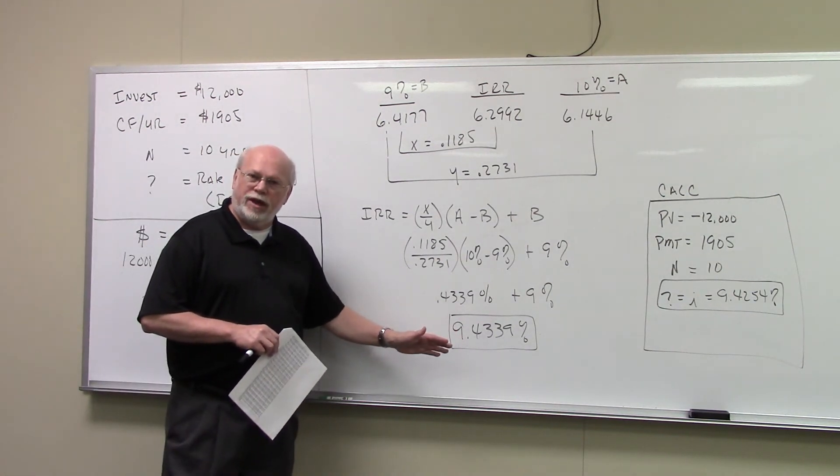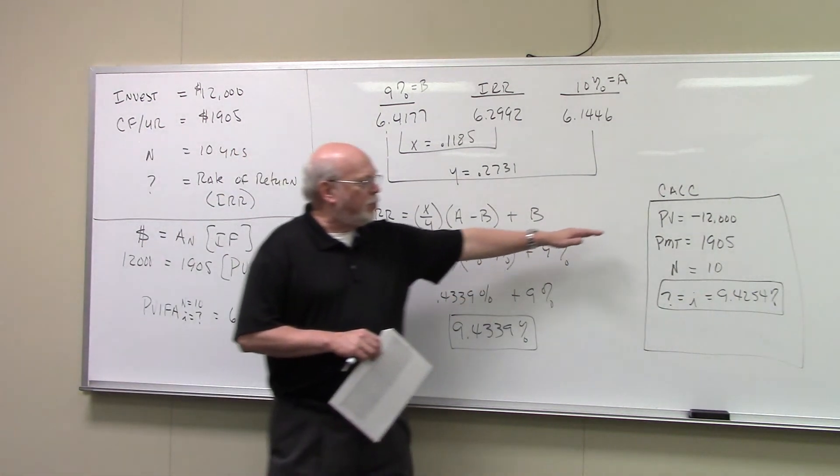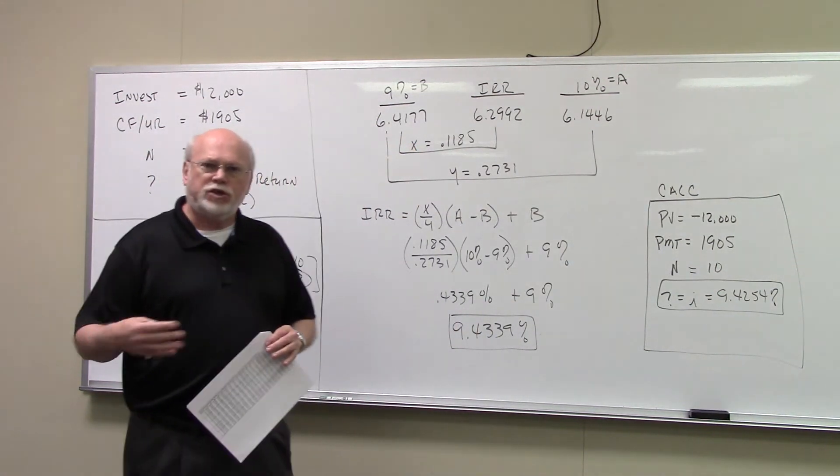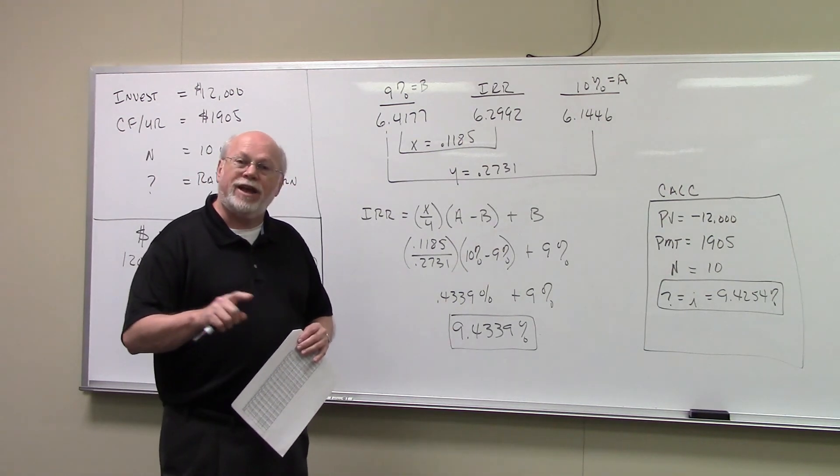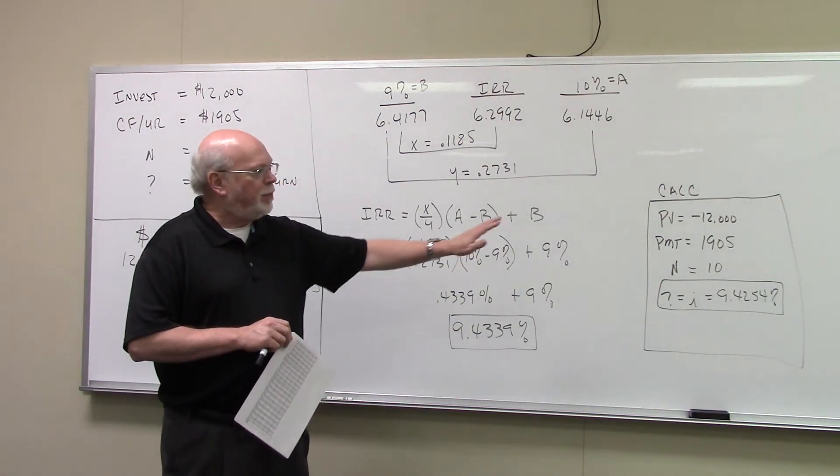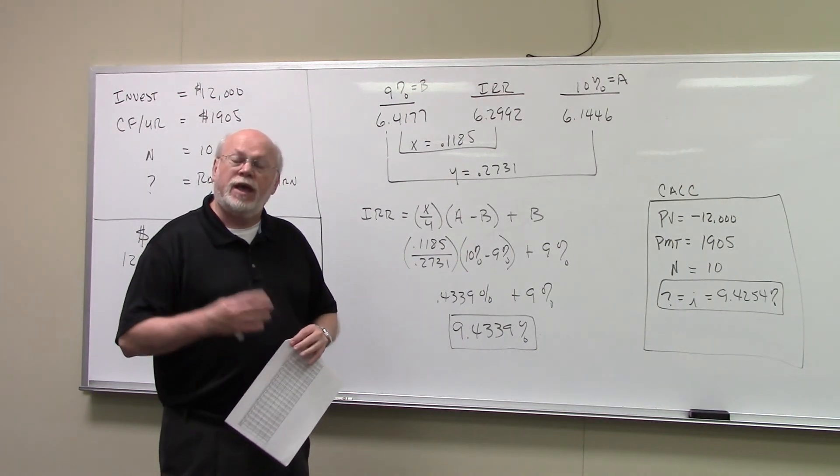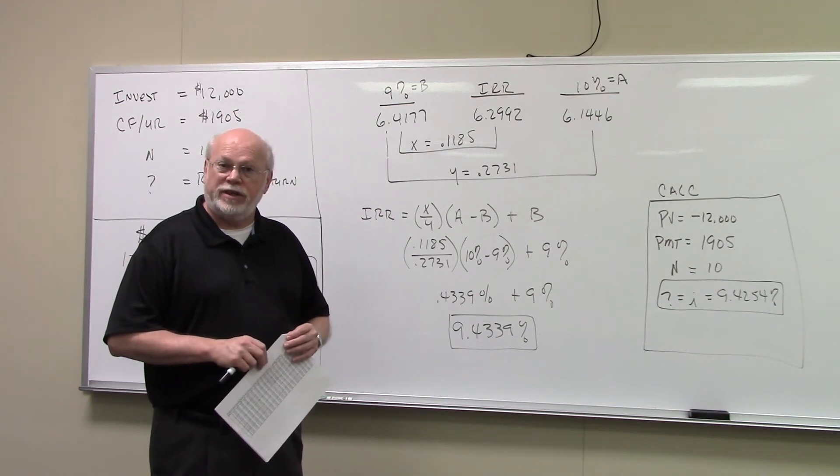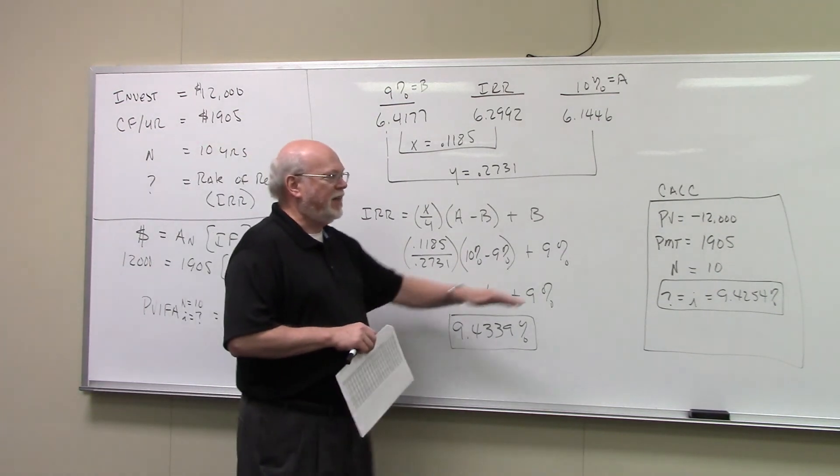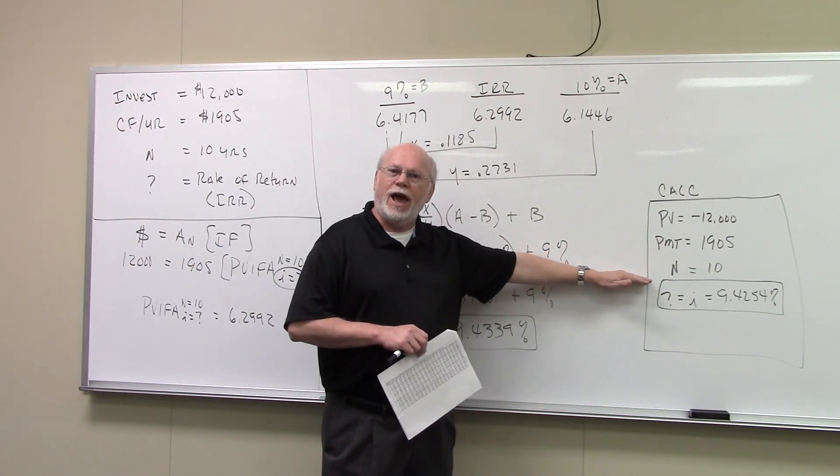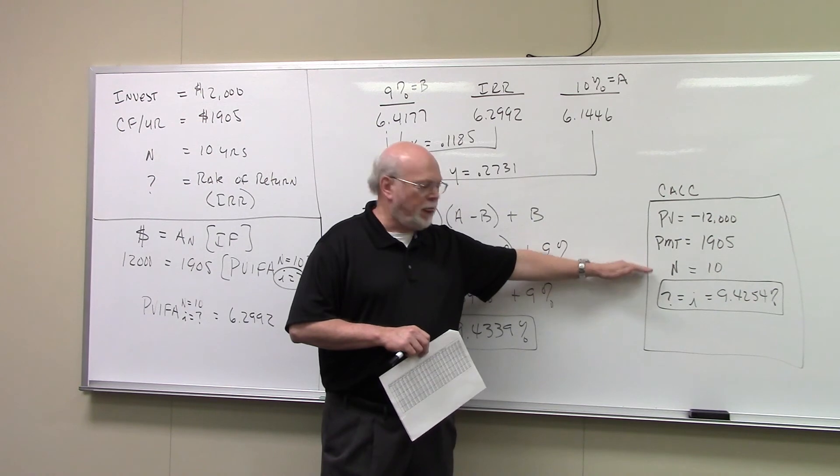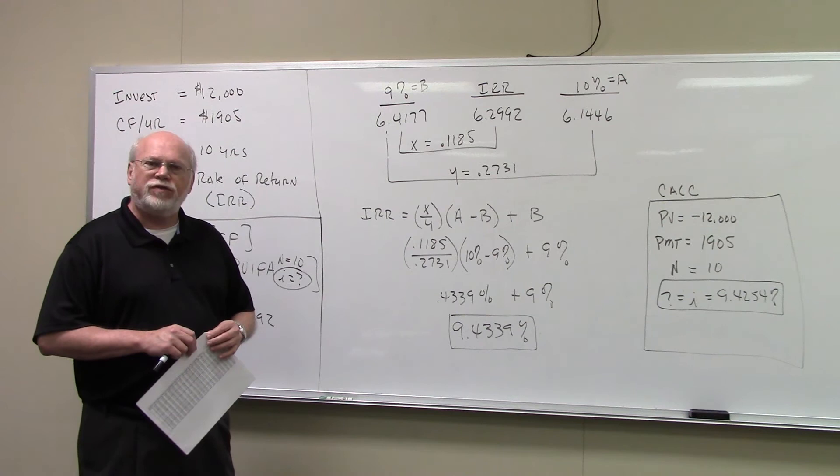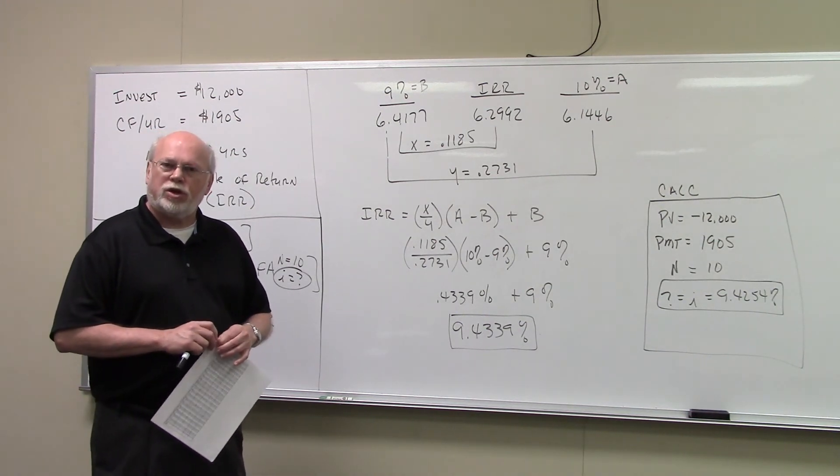If you wanted to do this in your calculator, present value is where you would put the cost of the investment. The cost is an outflow. So in present value, you put a negative $12,000. The payment is where you put the value of the annuity. This investment's payment is $1,905 every year for 10 years. So the payment is $1,905. Those are yearly payments. How many of those did you get? That's N. That's 10. Have your calculator solve for I, and you'll get 9.425 percent. And that's the rate of return on this investment.